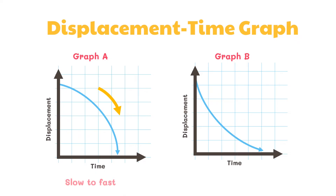Graph B also depicts an object with negative velocity since there is a negative slope. The object begins with a high velocity since the slope is initially large and finishes with a small velocity since the slope becomes smaller. So this object is moving in the opposite direction and slowing down.